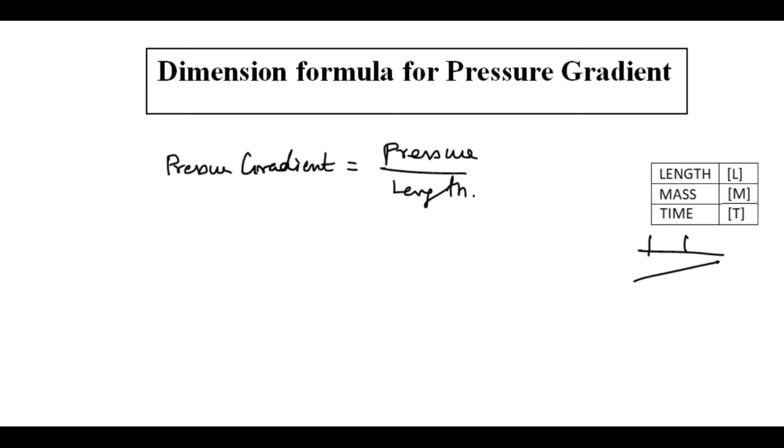We define pressure gradient to determine the pressure at different points. Now we try to find the dimension formula for the pressure.